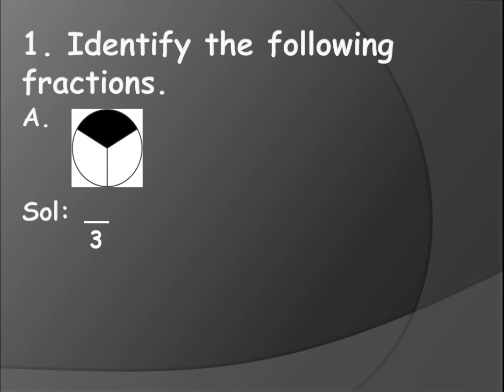Below the dash, which is the denominator, you will write the total number of parts which they have divided. In the numerator you will write how many parts have been colored or shaded. How many are there? One. So you will write one in the numerator. So this is your fraction - this is your denominator and this is your numerator.